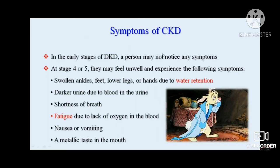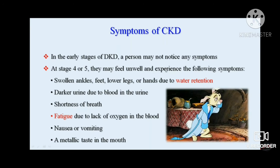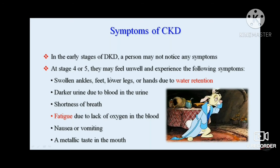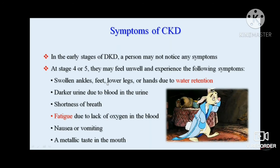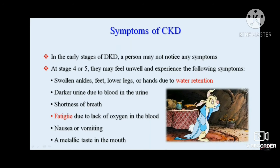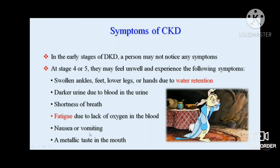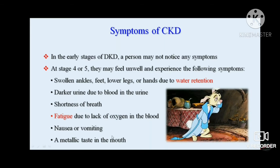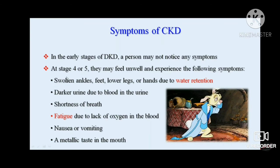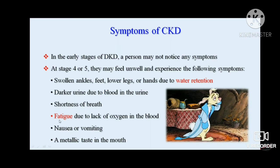Generally in all stages, patients may not notice any symptoms, which is why the disease often remains unnoticed. Only in stages four and five may they feel symptoms like swollen ankles (edema), swelling of the lower legs, darker urine, shortness of breath, fatigue, nausea, vomiting — which is a very late feature when uremia occurs — and metallic taste in the mouth. In clinical practice, the most common presenting symptoms are edema, shortness of breath, and fatigue.